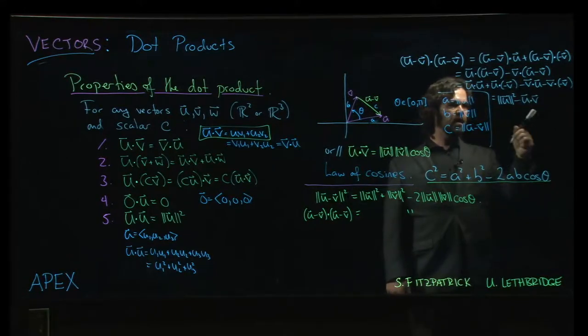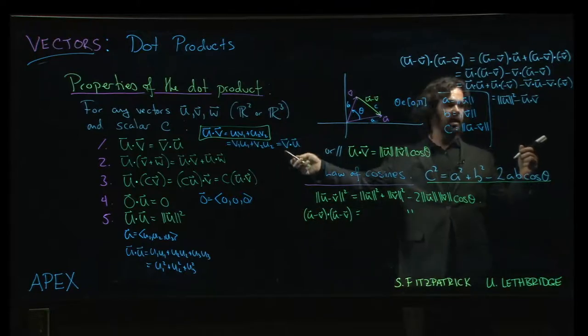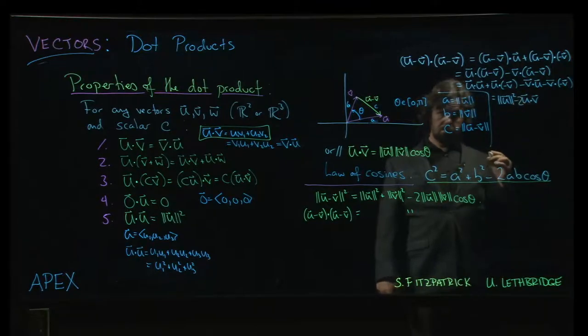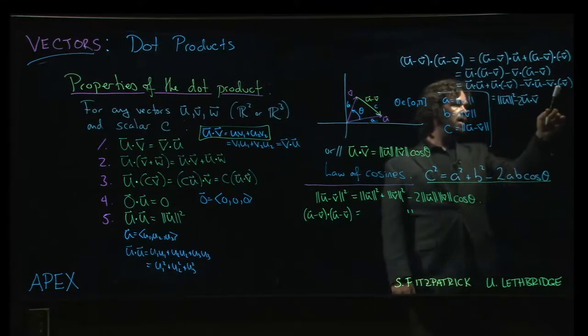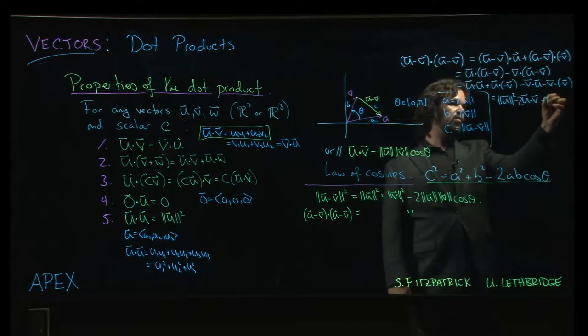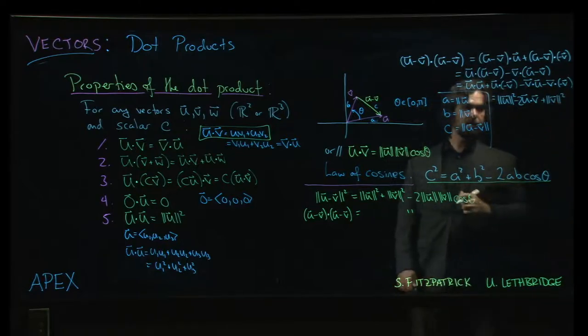Oh, but v dot u is also u dot v, that's property 1. And there's two of them, so actually, I can put a 2 in there. And then that minus sign I can also pull out, minus times minus gives me a plus, and so I get the magnitude of v squared.